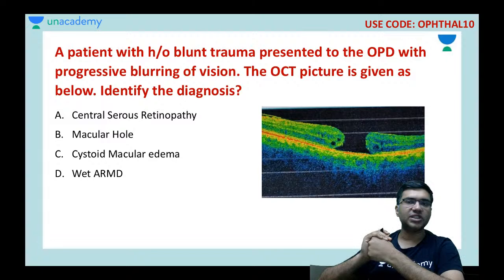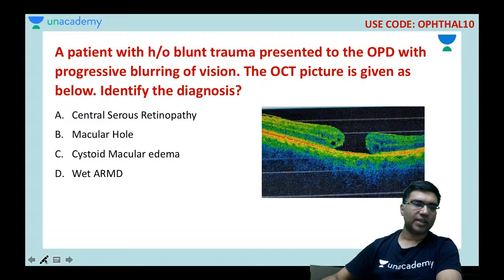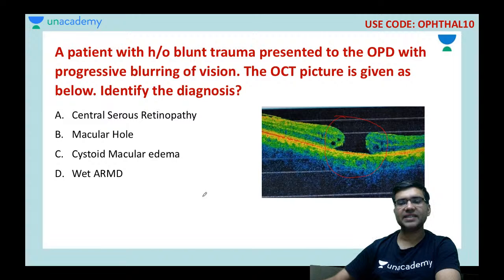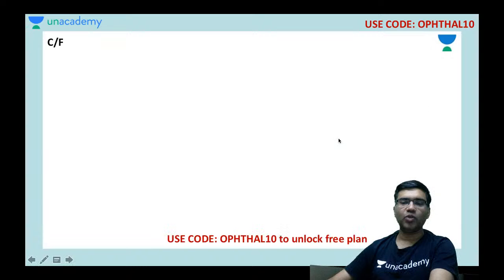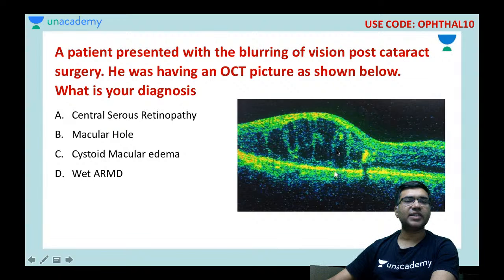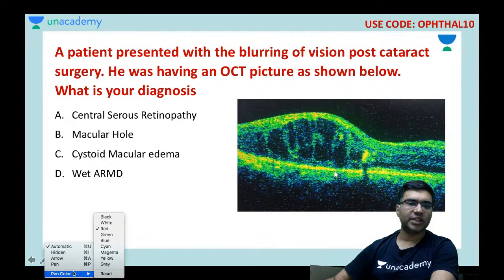A patient with a history of blunt trauma presents with progressive blurring of vision. In the OCT picture, there are no retinal layers at the center of the macula or fovea. This is called a macular hole. When there is elevation of the retina it is central serous retinopathy; when there are no layers it is a macular hole.